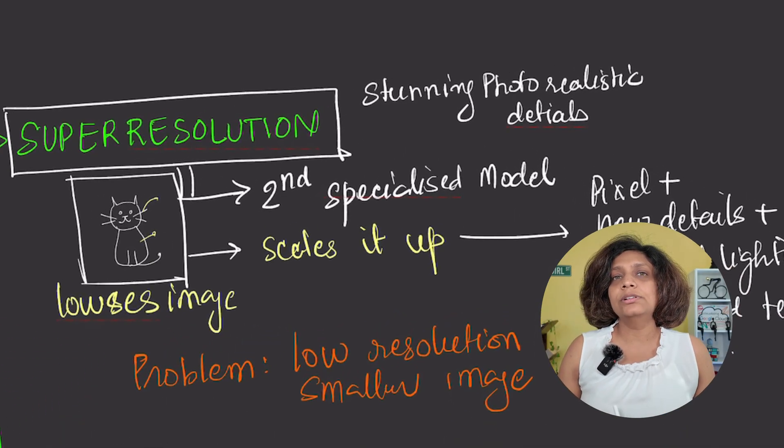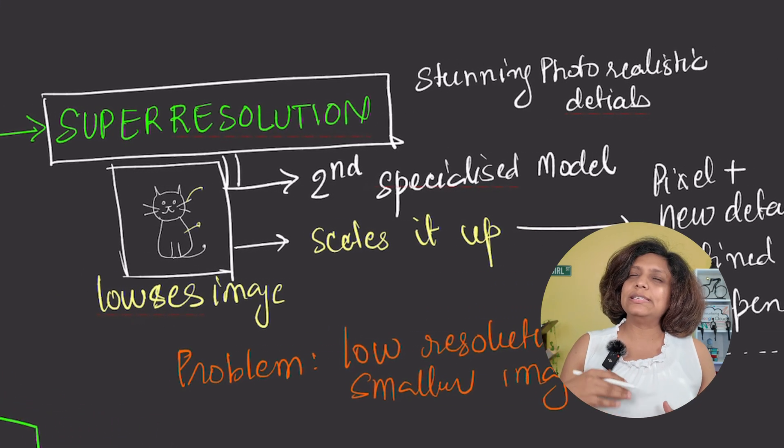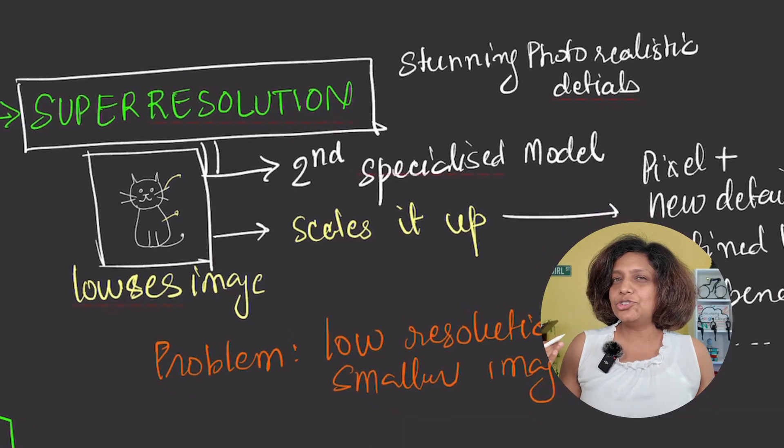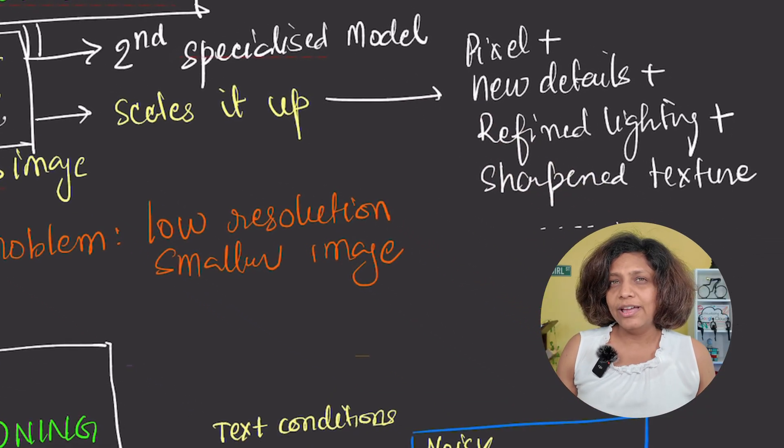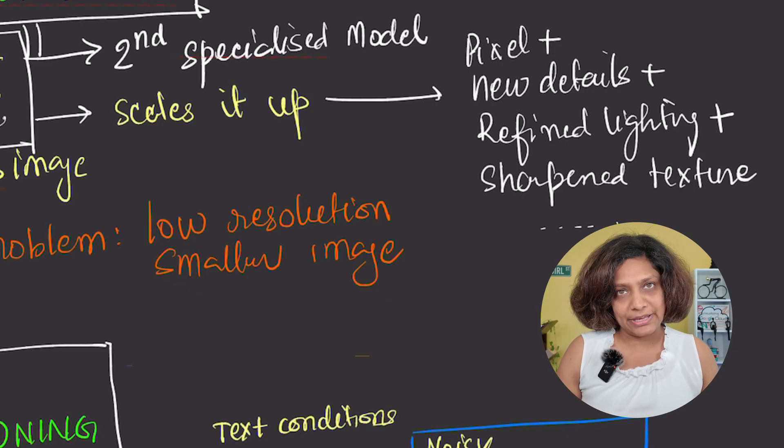A second, specialized AI model then takes this low-resolution image and intelligently scales it up. It doesn't just make the pixels bigger—it adds new plausible details, sharpens the texture, and refines lighting to create a fine, high-resolution masterpiece.